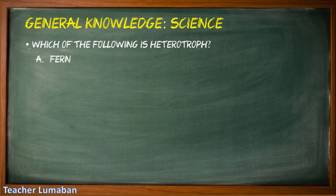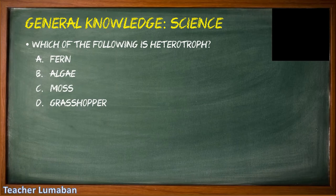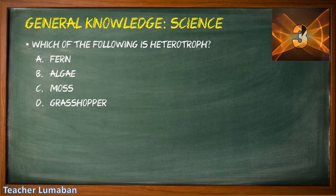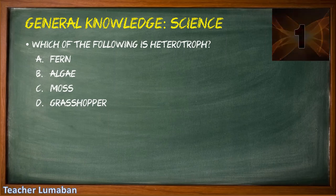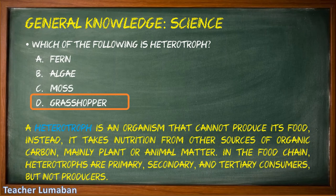Which of the following is a heterotroph? Letter A: fern, Letter B: algae, Letter C: moss, Letter D: grasshopper. The correct answer is Letter D: grasshopper. The grasshopper is a heterotroph — an organism that cannot produce its own food. Instead, it takes nutrition from other sources of organic carbon, mainly plant or animal matter. In the food chain, heterotrophs are primary, secondary, and tertiary consumers, but not producers.